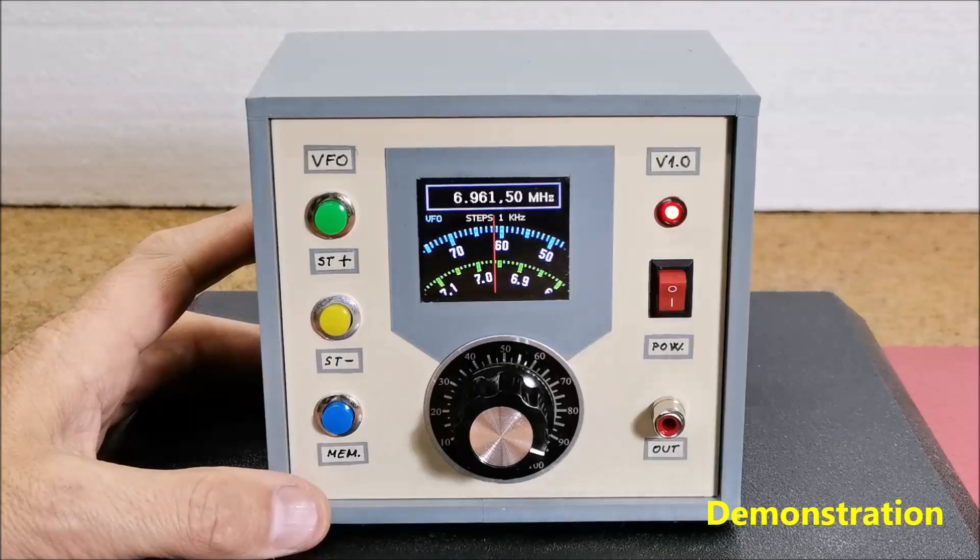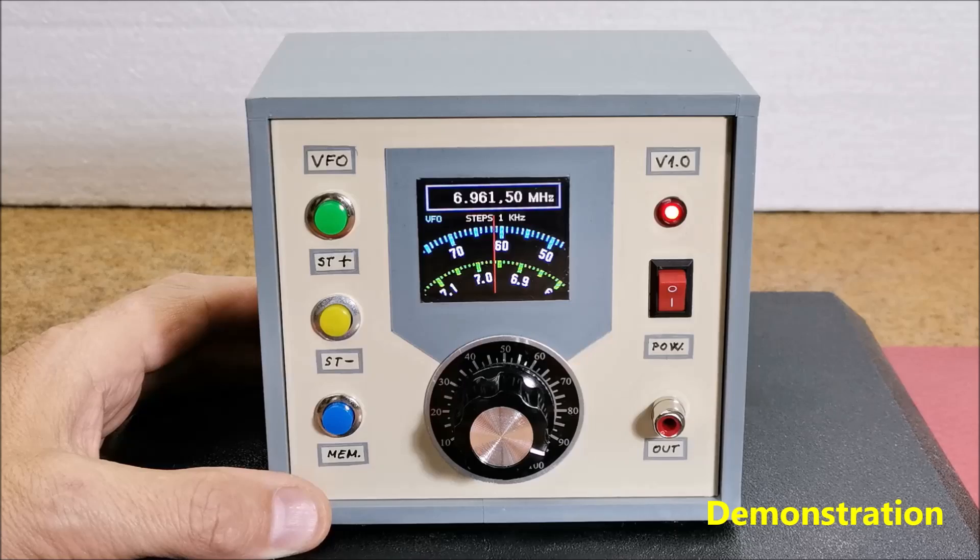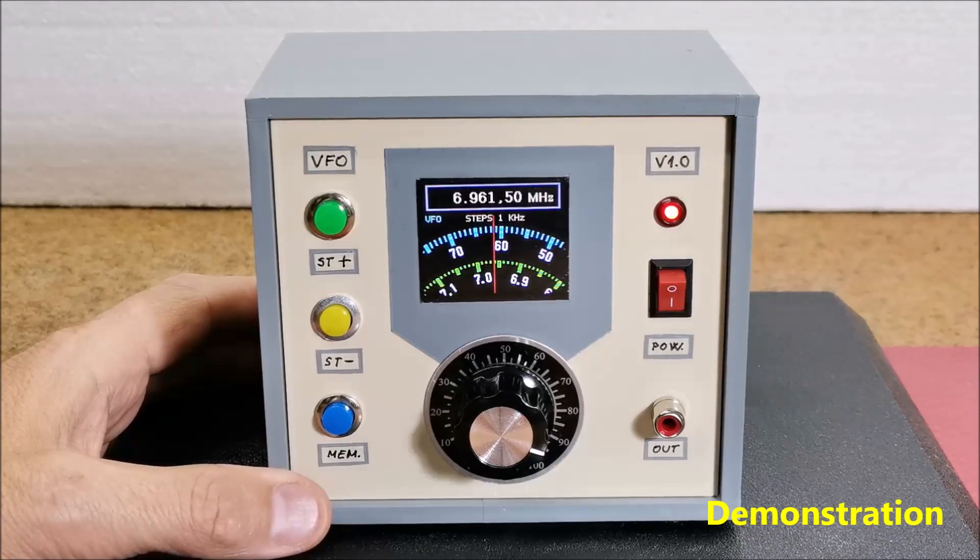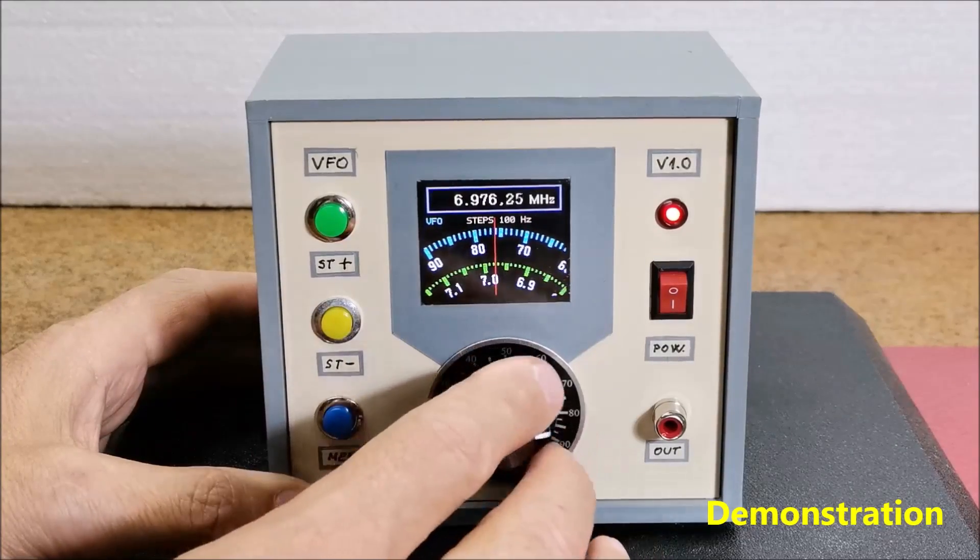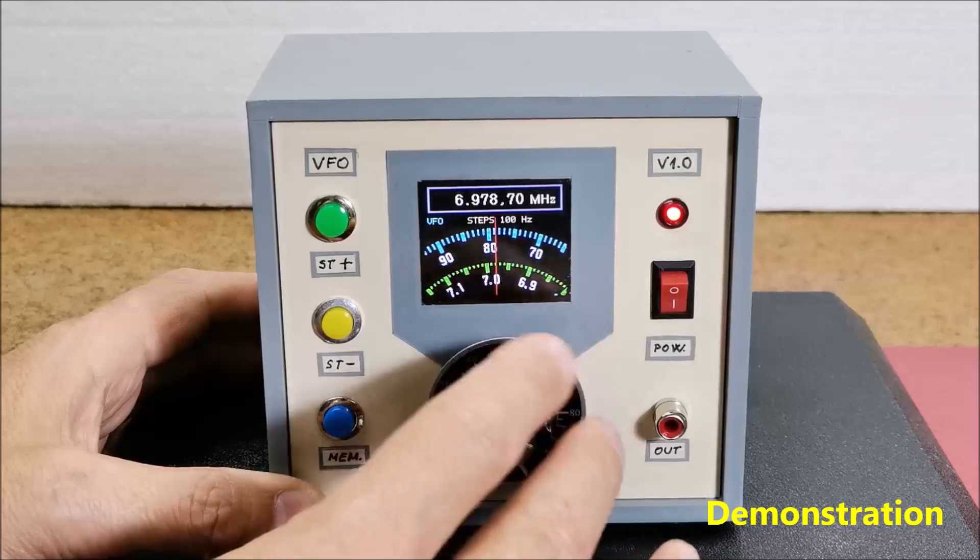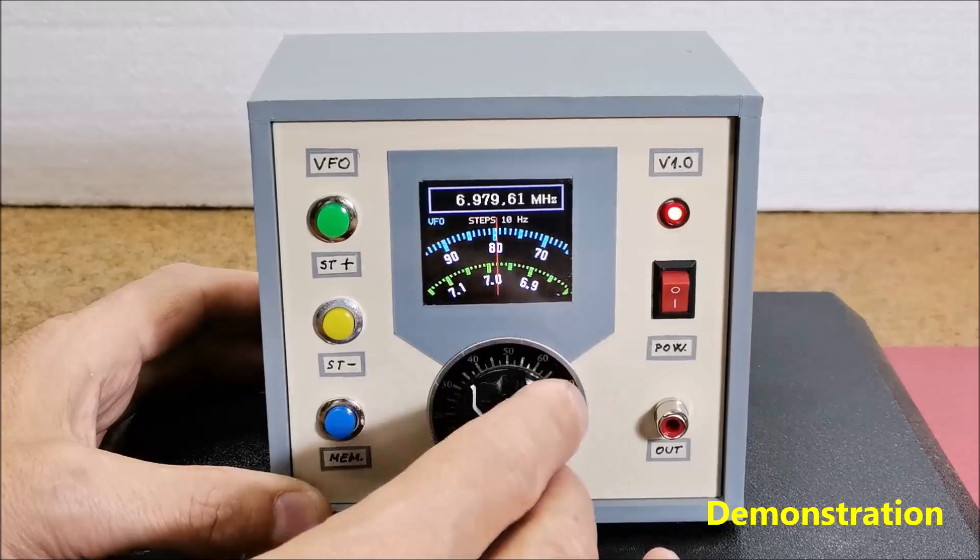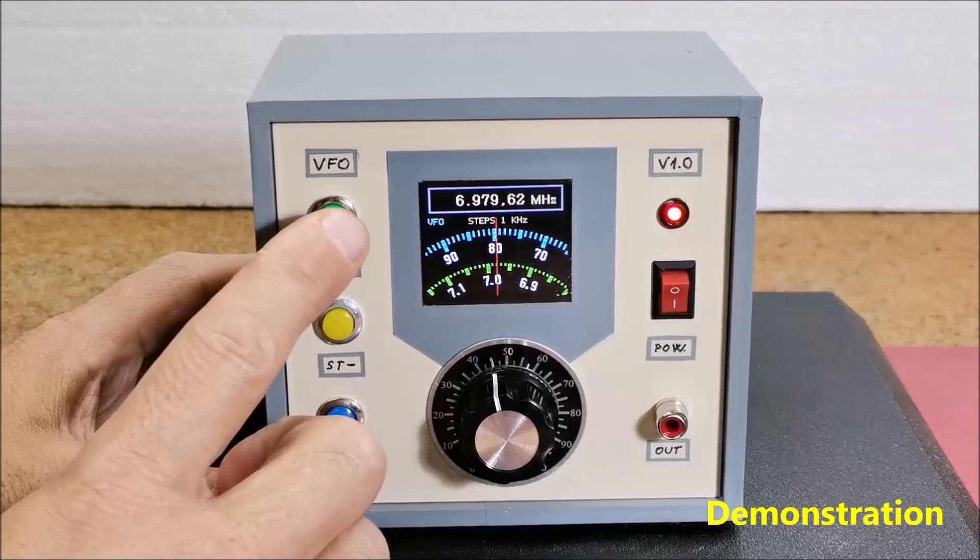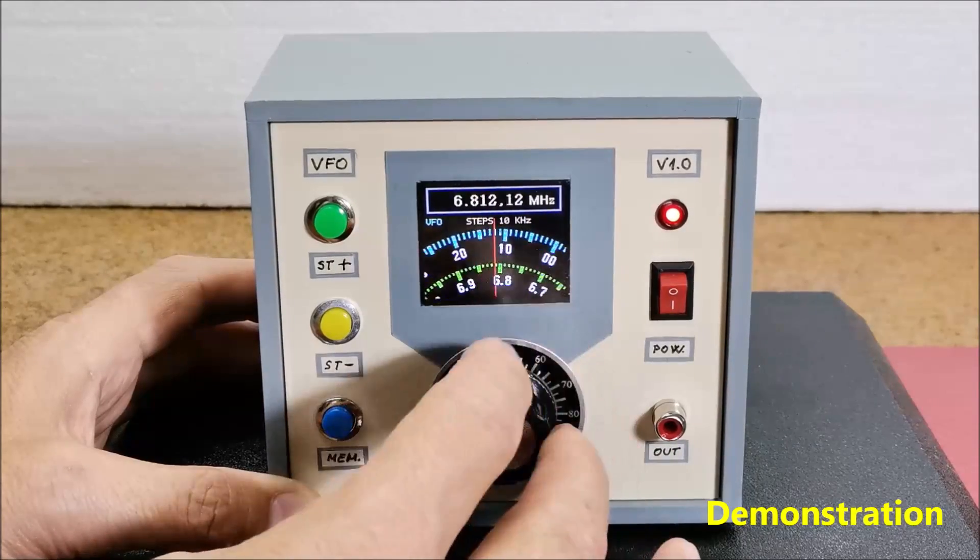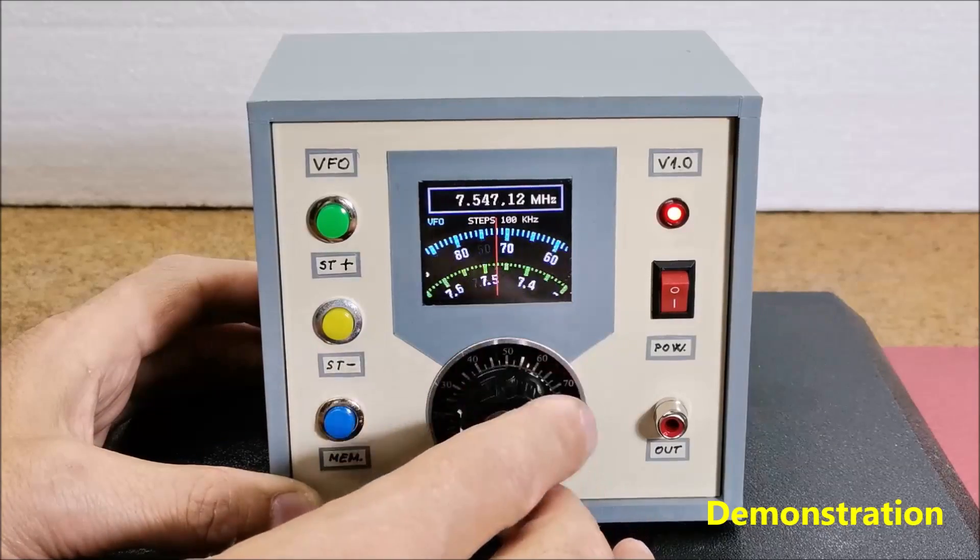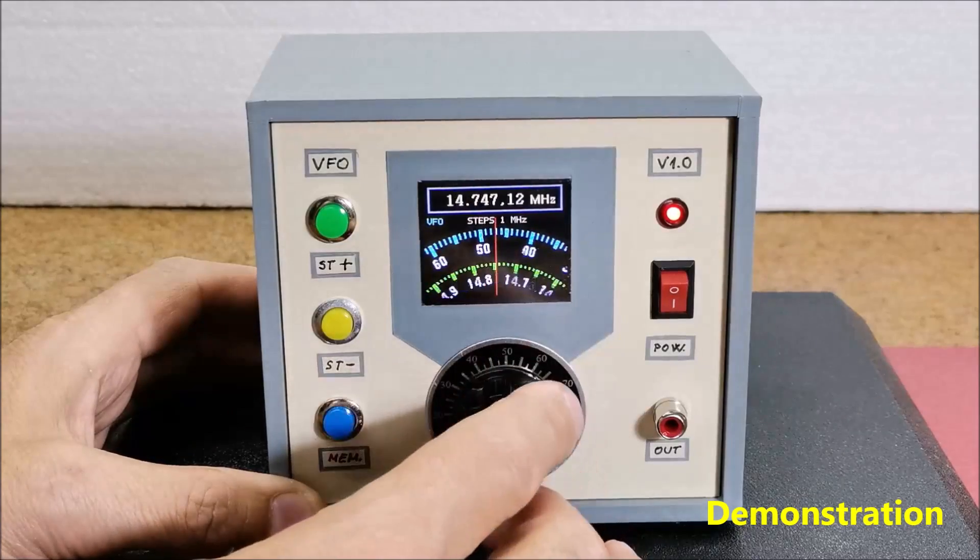The tuning step and thus the scale rotation speed is controlled by two buttons and ranges from 10 Hz to 1 MHz. Now step is 1 kHz, 100 Hz and 10 Hz step, 10 kHz, 100 kHz, and 1 MHz step.